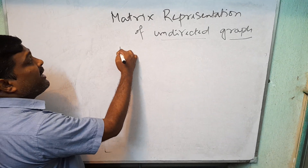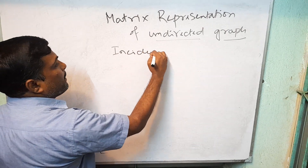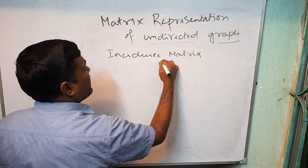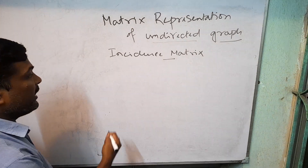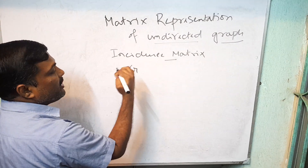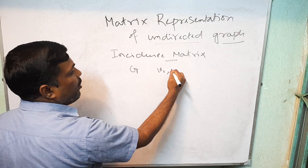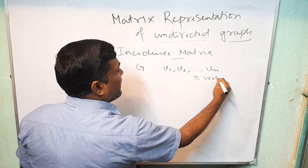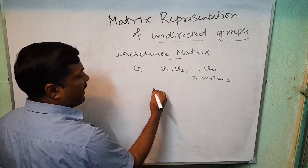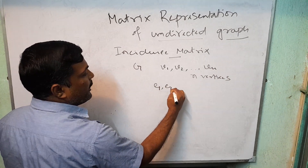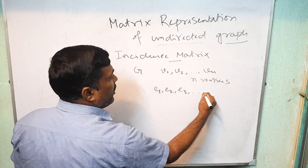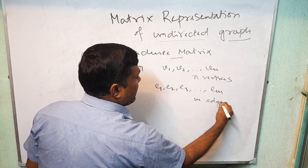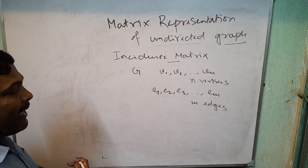Next, incidence matrix. Incidence matrix of graph G. Suppose the graph G has vertices V1, V2, ..., Vn — so N vertices — and the edges are E1, E2, E3, ..., Em — so M edges. This graph has N vertices and M edges.